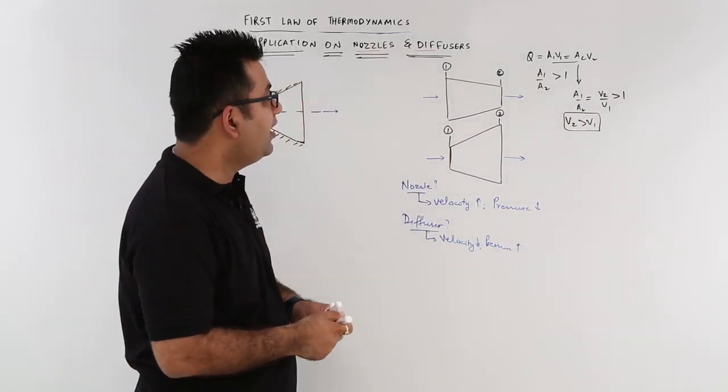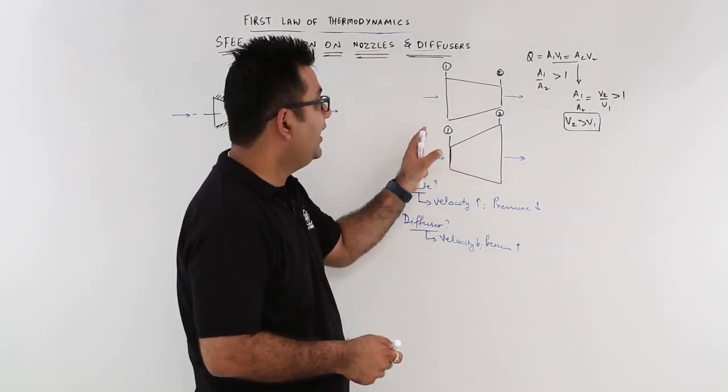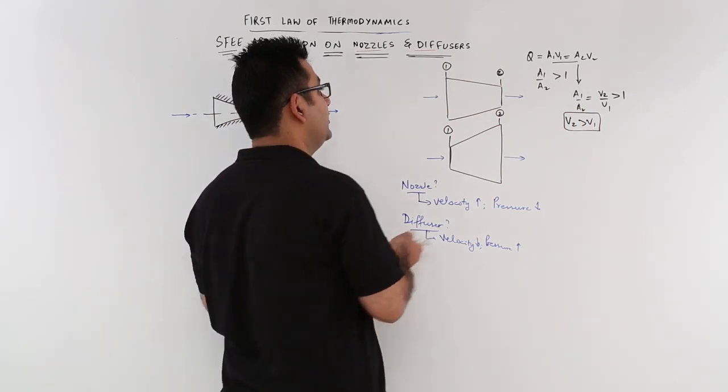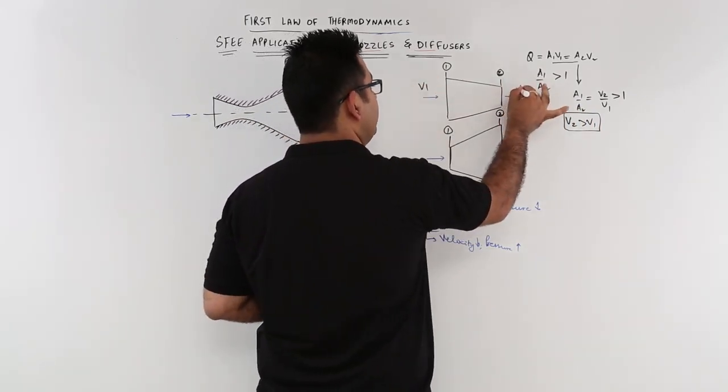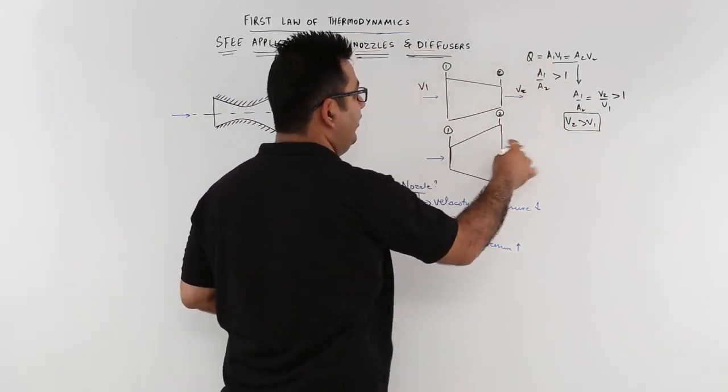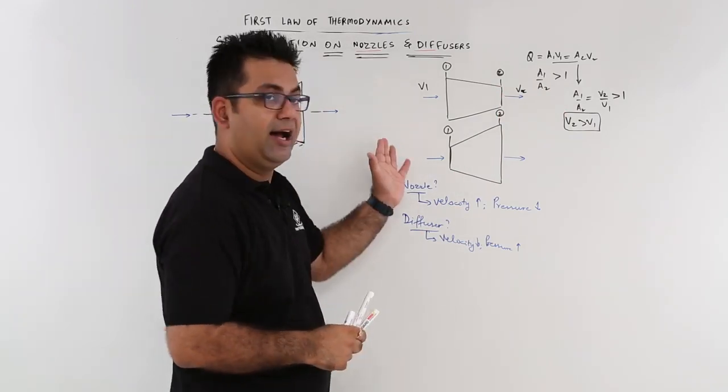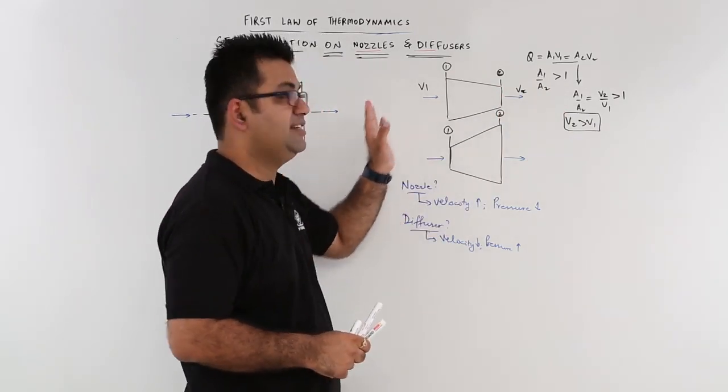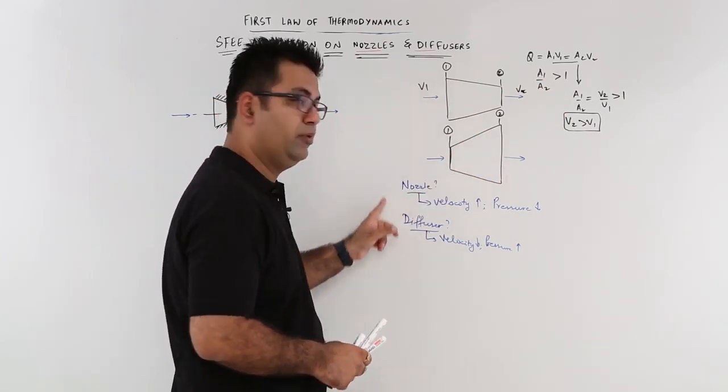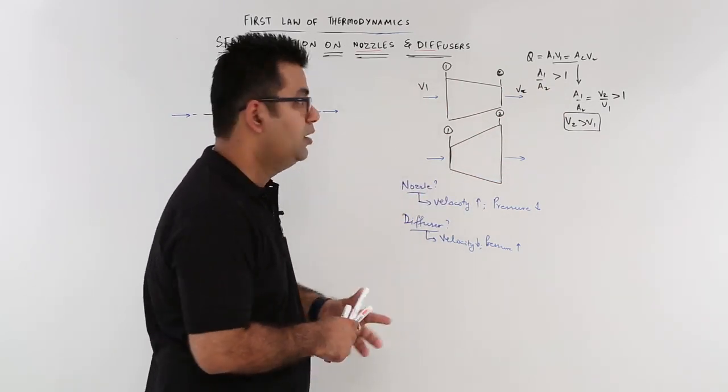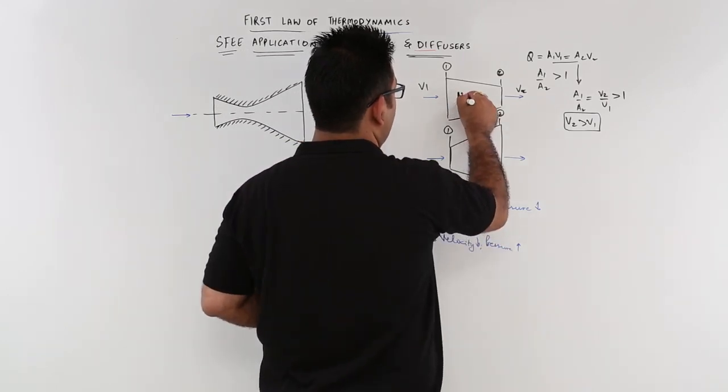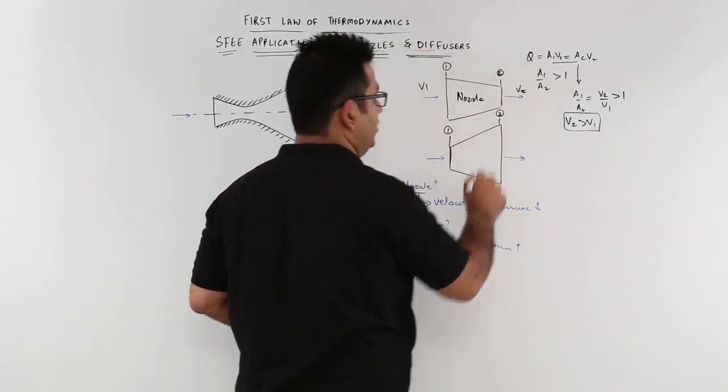This means we have a higher velocity at exit. So v2 is higher as compared to v1. You get higher velocity or the velocity increases at outlet in which one of these two devices? That is nozzle. So this device is nothing but nozzle.